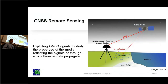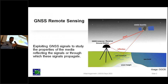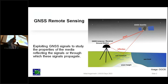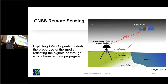First of all, we have a keyword: what is GNSS remote sensing? I would like to redefine it. One definition we can have for GNSS reflectometry is exploiting GNSS signals to study the properties of the media reflecting the signals, or through which these signals are propagating. This is the classical form of GNSS remote sensing. We have a ground-based station and the direct signal passes through the atmosphere and ionosphere, so we can extract the properties of this media.